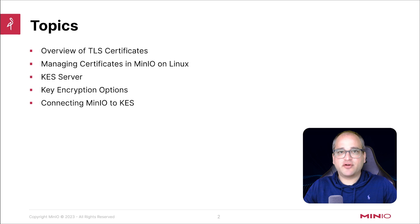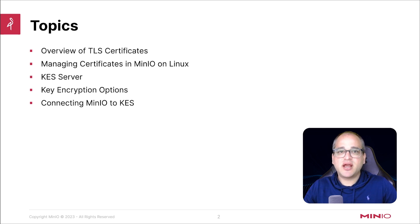A bit more about our agenda over the next few videos. We're going to kick things off by doing an overview of what TLS certificates are and how to do basic certificate management in a Linux environment. Then we're going to spend some time diving into KES, which stands for Key Encryption Service — that's MinIO's service that provides high performance management of encryption keys. Then we're going to touch on best practices around various options and configurations related to MinIO's approach to data encryption. Finally, we're going to round things out by showing you how to connect everything together and show a working exercise of using MinIO with encryption fully configured and enabled.